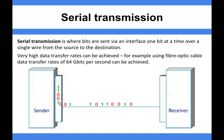Serial transmission is where bits of data are sent via an interface, typically wires, one bit at a time. So over a single wire from the sender to the receiver, it's known as serial transmission if there's a single wire and all the bits are sent down the same wire one bit at a time. Very high data transfer rates can be achieved with this — fiber optic, for example, is serial transmission using light.